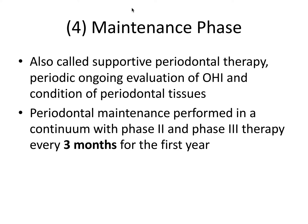Finally, we have the maintenance phase, also called phase four therapy or supportive periodontal therapy. This is the periodic, ongoing evaluation of the patient's oral hygiene and the condition of the periodontal tissues — remeasuring pocket depths and assessing inflammation. Periodontal maintenance is performed every three months for at least the first year, after which the patient might move to a twice-a-year schedule. Any patient who has ever had scaling and root planing will be on periodontal maintenance for the rest of their life, because a history of disease is a risk marker for future disease.